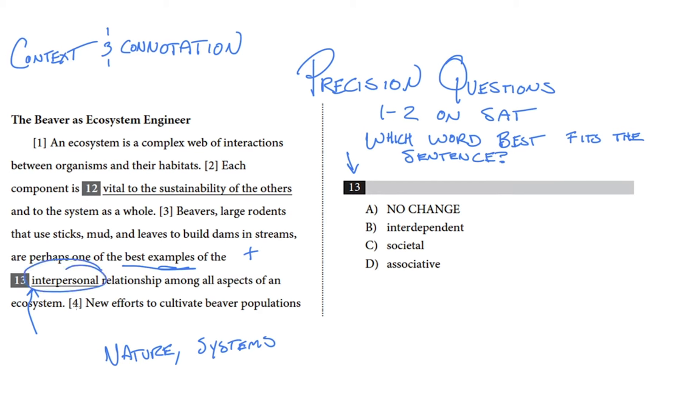Interpersonal. Does that have a connotation of systems? I'd say yes, but they're human systems. It has the word person in it. And we're talking about the relationship between beavers, streams, and other animals and plants in that ecosystem. A stream isn't people. So a relationship between a beaver and a stream can't be interpersonal. Cross it off.